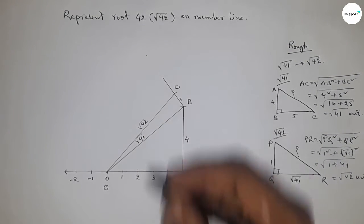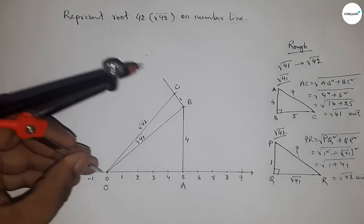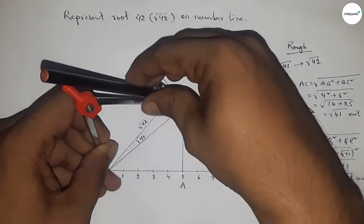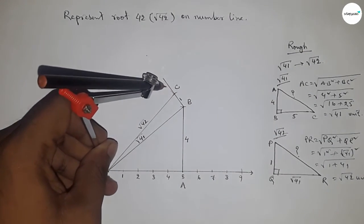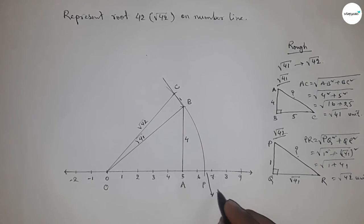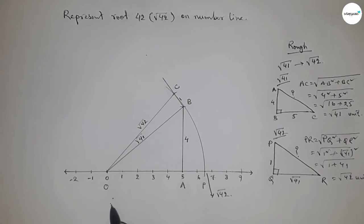Now taking the length OC by compass to draw an arc which meets the number line at a point. And this is P, and this is the representation of root 42 on number line. Therefore, distance OC and OP are equal, so equal to root 42 unit.